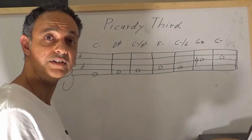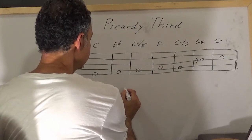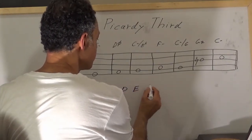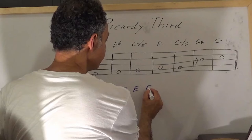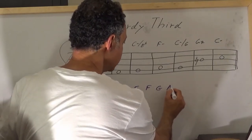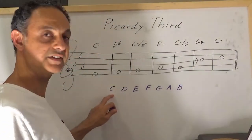So let's write down the notes of C major scale. So it's going to be C, D, E, F, G, A and B. The C major scale.